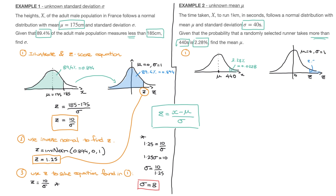Using the z score formula and replacing x with 440 and the standard deviation with 40, the z score equation becomes z = (440 − μ) / 40. That's step one completed for example two.